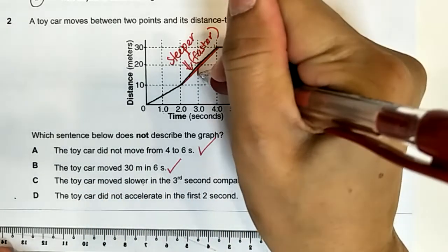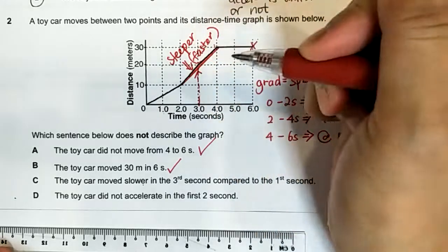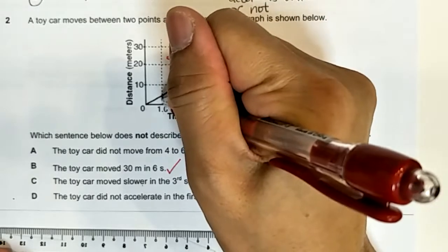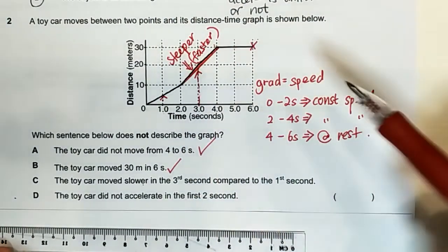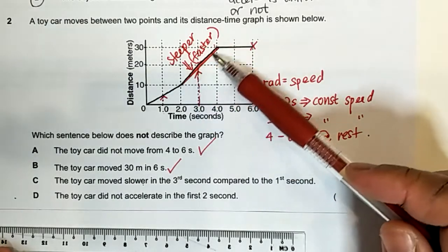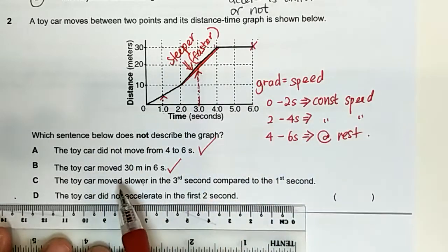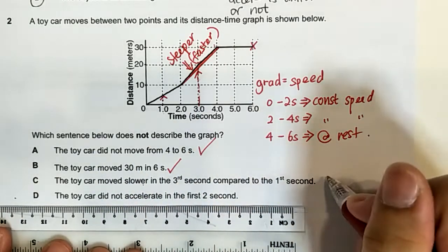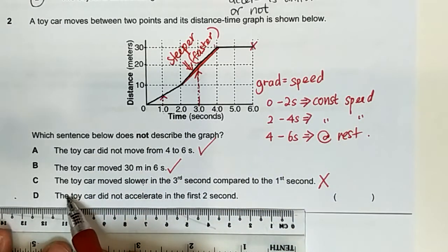The toy car moved slower in the third second, so the third second refers to this one, this part of the graph compared to the first second. So again I mentioned at the start since this part of the graph is steeper therefore it will be moving faster over here, so it is not true that it is moving slower, so this is not true.